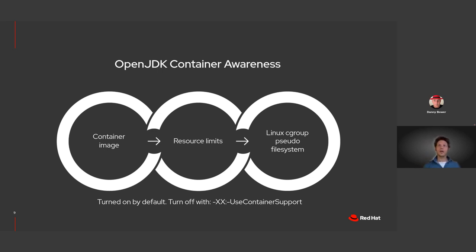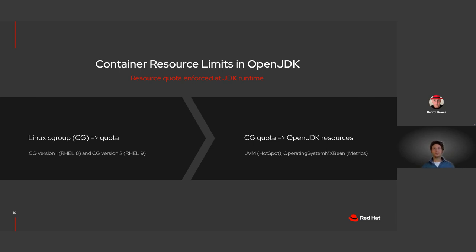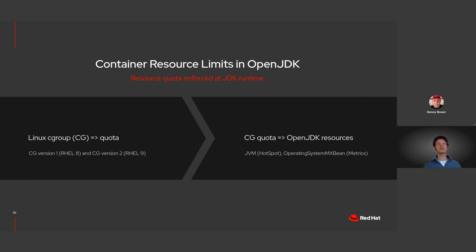Container support is turned on by default, and you can turn it off using the switch XX:minus:UseContainerSupport. When deploying to OpenShift, the OpenJDK reads the Linux pseudo file system to determine the quota. It first figures out which Linux Cgroups version is in use — for RHEL 8, the default is Cgroups version 1; for RHEL 9, the default is Cgroups version 2. The OpenJDK code handles both and then resizes its internal structures as if it has the physical memory specified by the Cgroup quota.